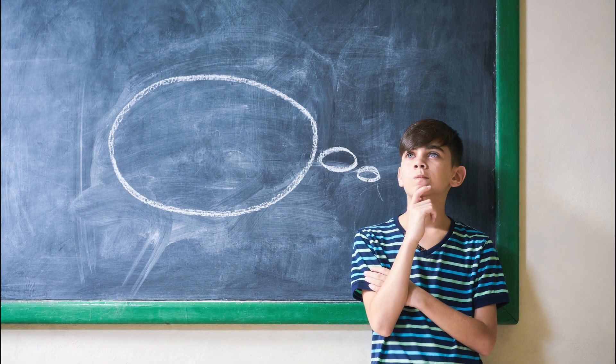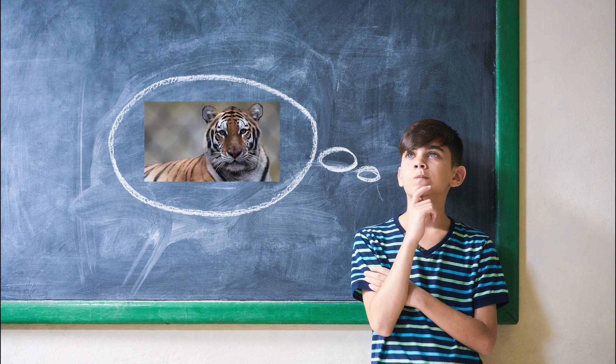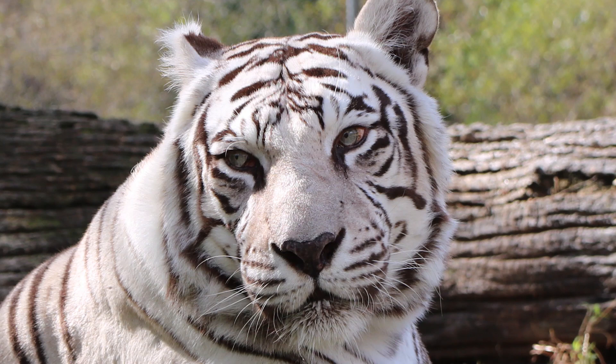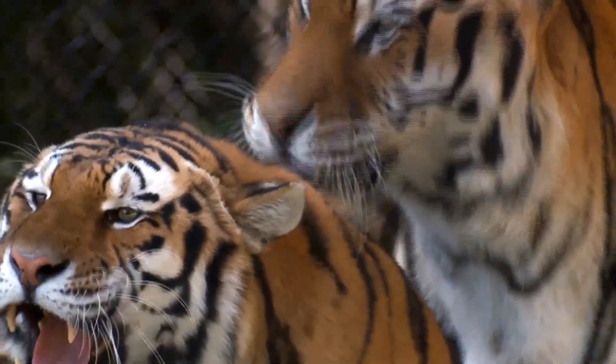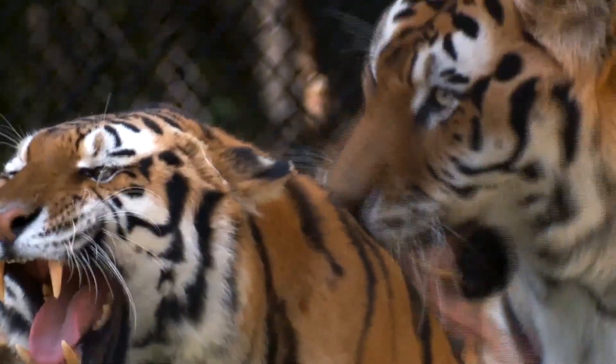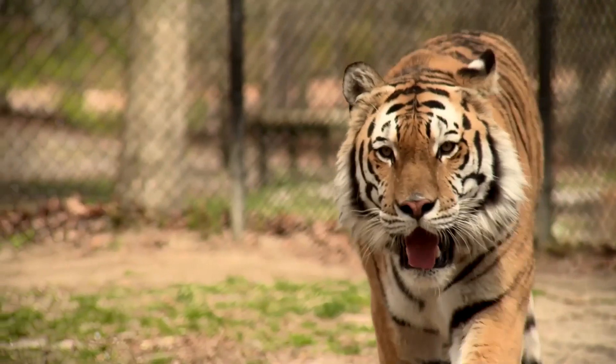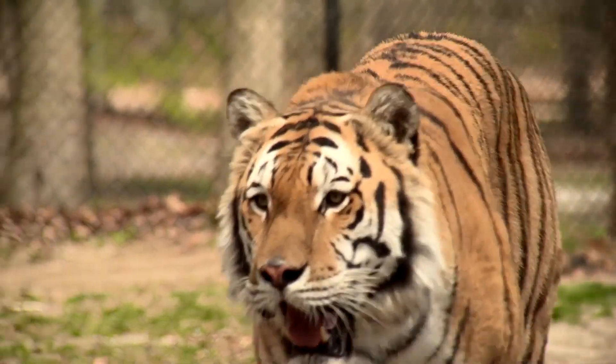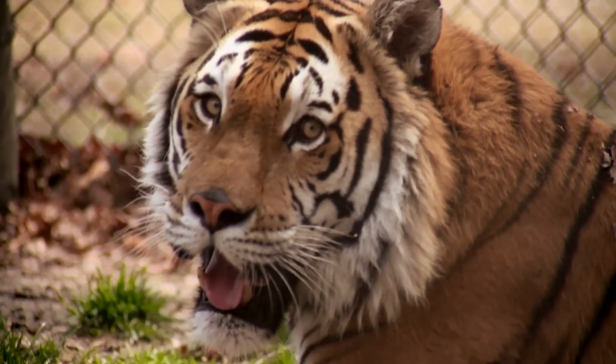Picture a tiger in your mind. What do you see? An orange tiger with black stripes? Well, I pictured a white tiger with black stripes. Did you know that there are different fur colorations in tigers? So how common is this, and how can scientists predict the genetic outcome of animal offspring?